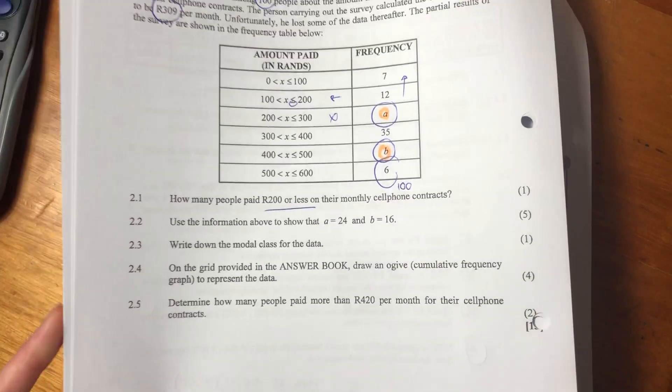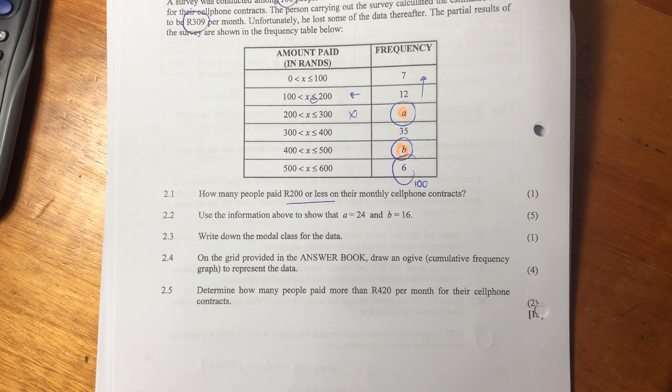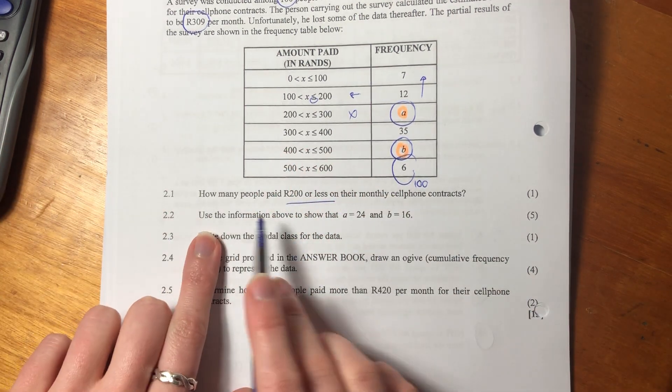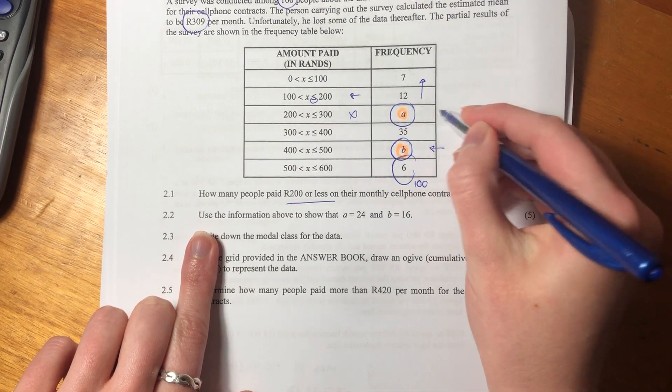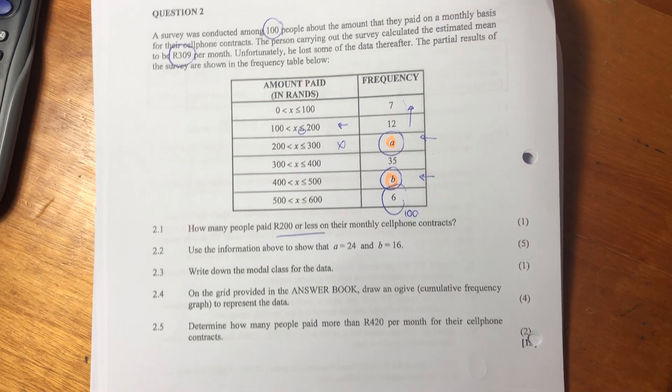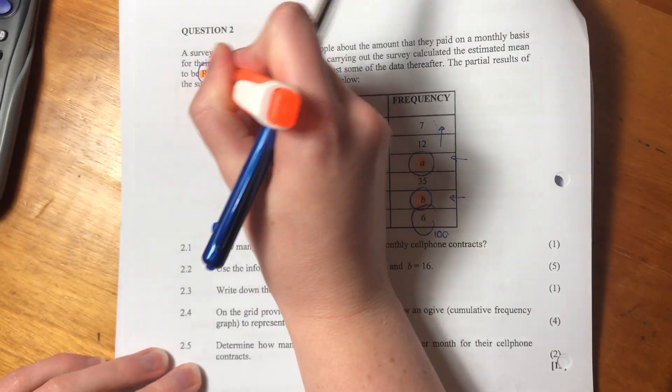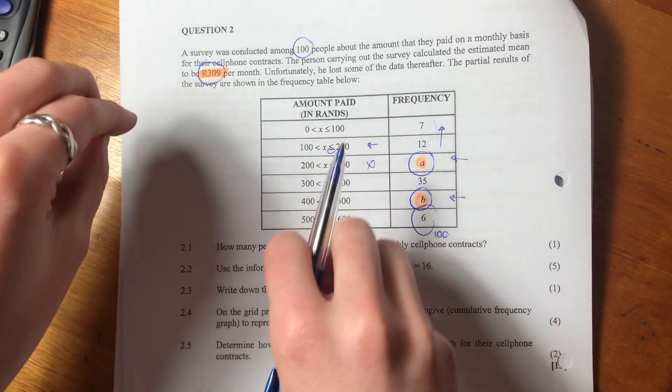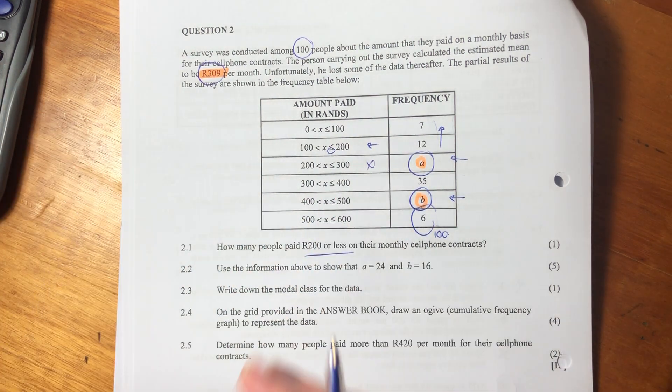Let's now go to 2.2. This is a much meatier question. Sometimes when students see this, they're like, I'm going to skip this one, it seems impossible, but it's not. This is just testing how you can display your understanding of simultaneous equations. It says, use the information above to show that A equals 24 and B equals 16. They want to solve for the unknowns. We know that all of these values have to equal 100. But we know something else which will help us with the simultaneous equation.